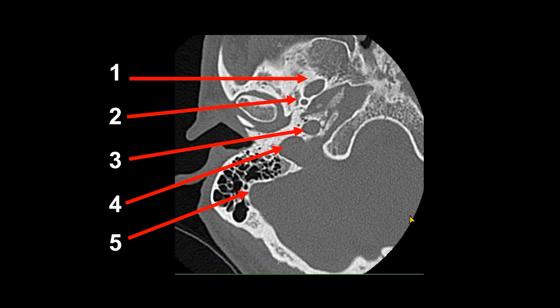We're flipping to look at the right side of the temporal bone and skull base. These structures are numbered for you — you can quiz yourself by pausing the recording and writing down your answers. Number one represents the foramen ovale, the egress of the third division of the fifth cranial nerve — the trigeminal nerve — specifically the mandibular nerve. Number two is the foramen spinosum, just posterolateral to the foramen ovale, which transmits the middle meningeal artery as well as some nondescript nerves.